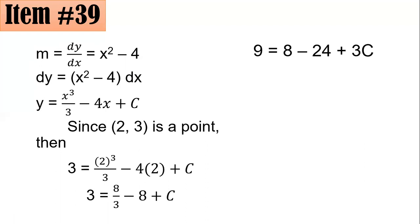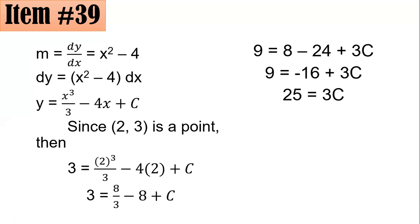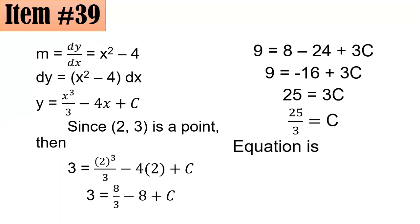Multiplying both sides by 3 to clear fractions: 9 equals 8 minus 24 plus 3c. Doing the algebra, 3c equals 25, so dividing both sides by 3 gives c equals 25/3. Substituting back, y equals x cubed over 3 minus 4x plus 25/3, which is letter a.